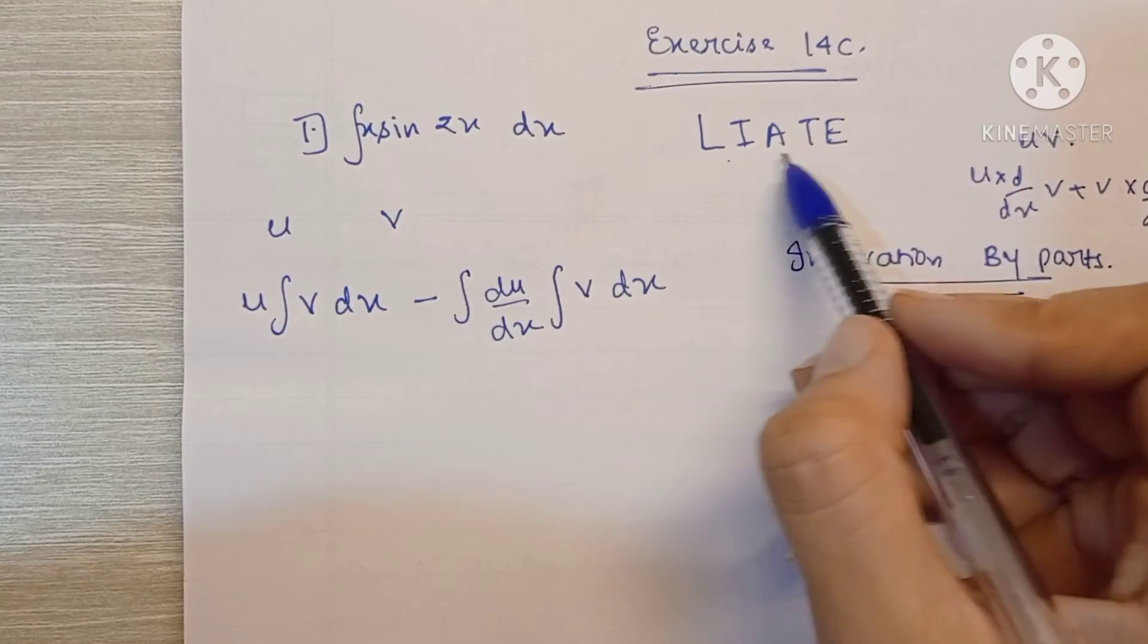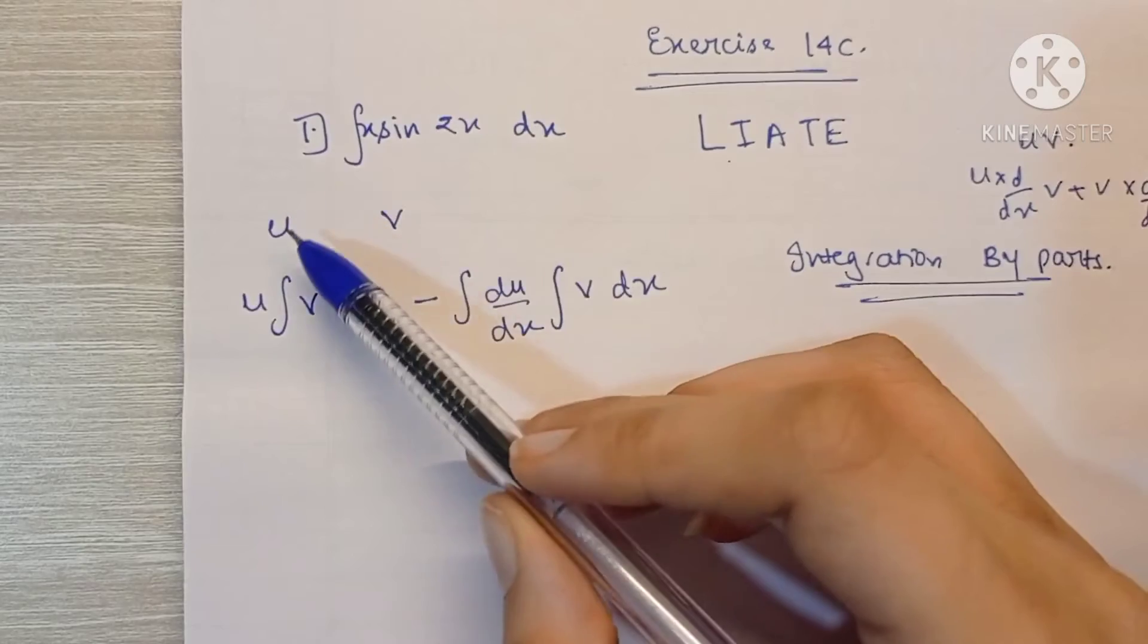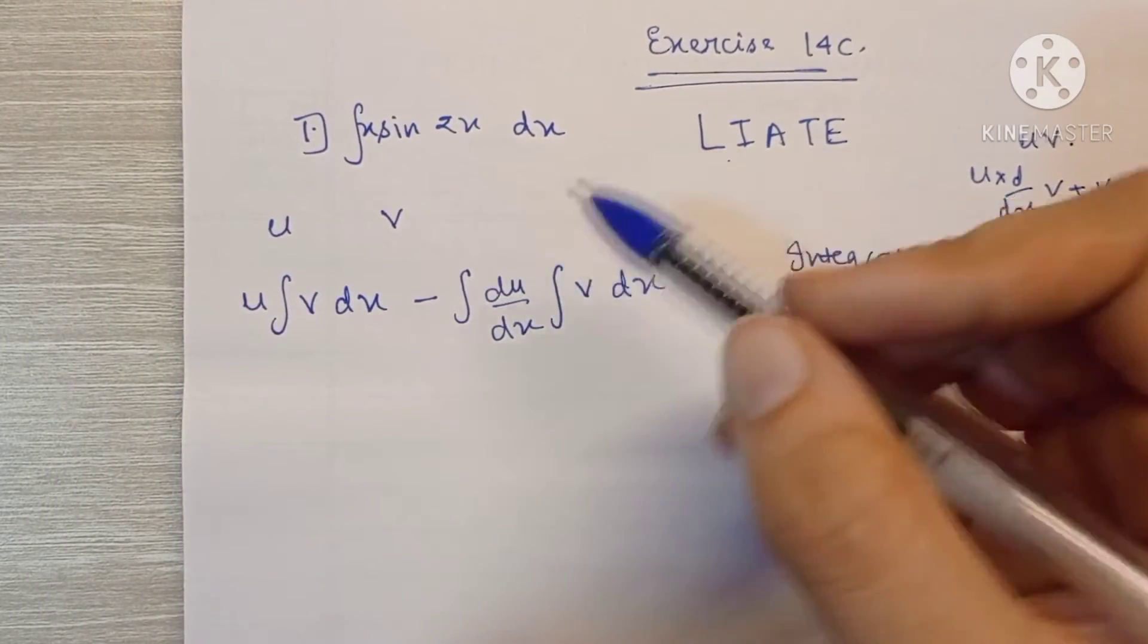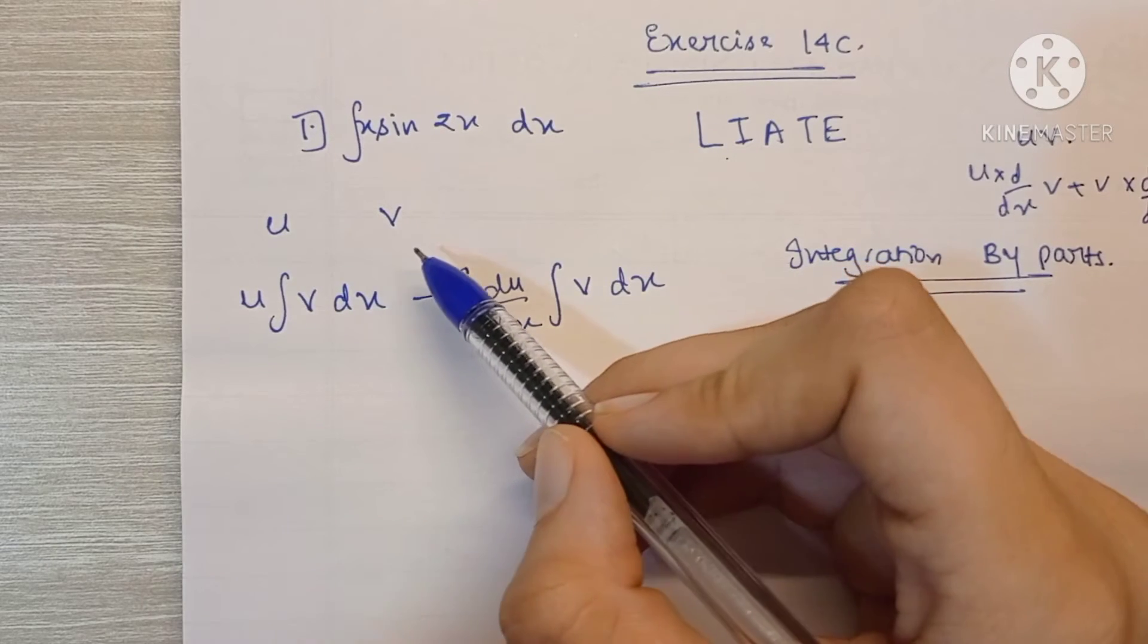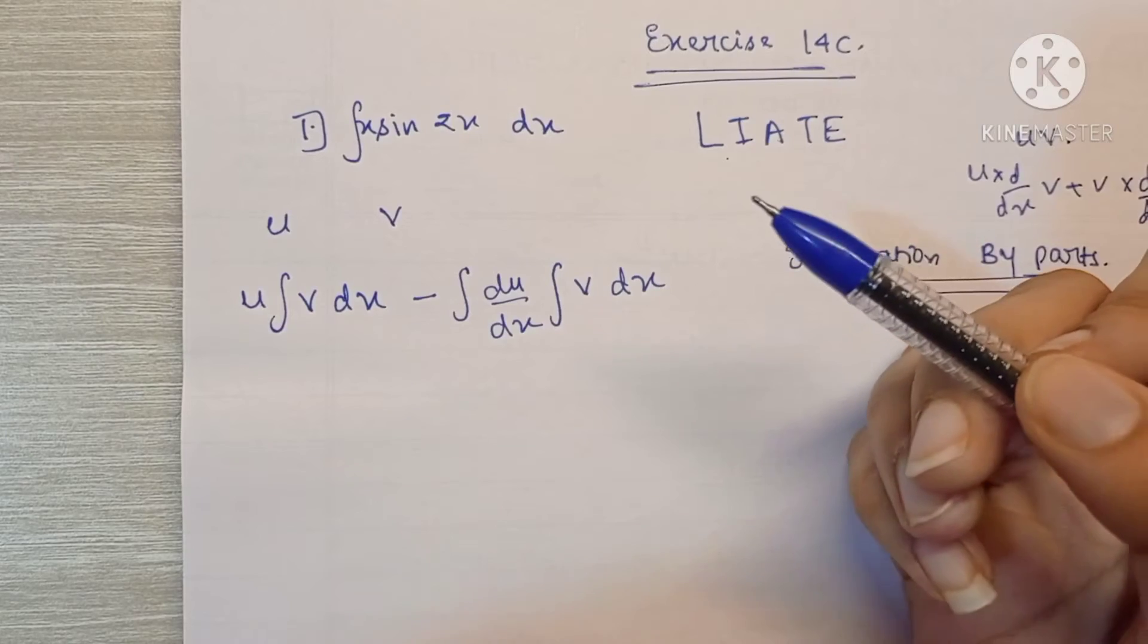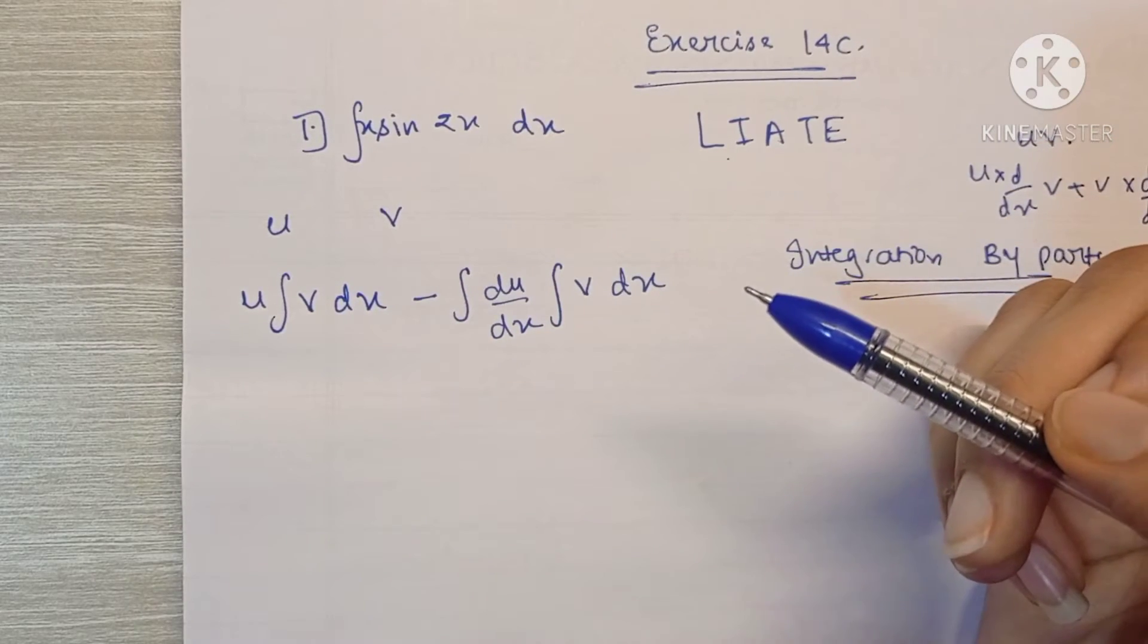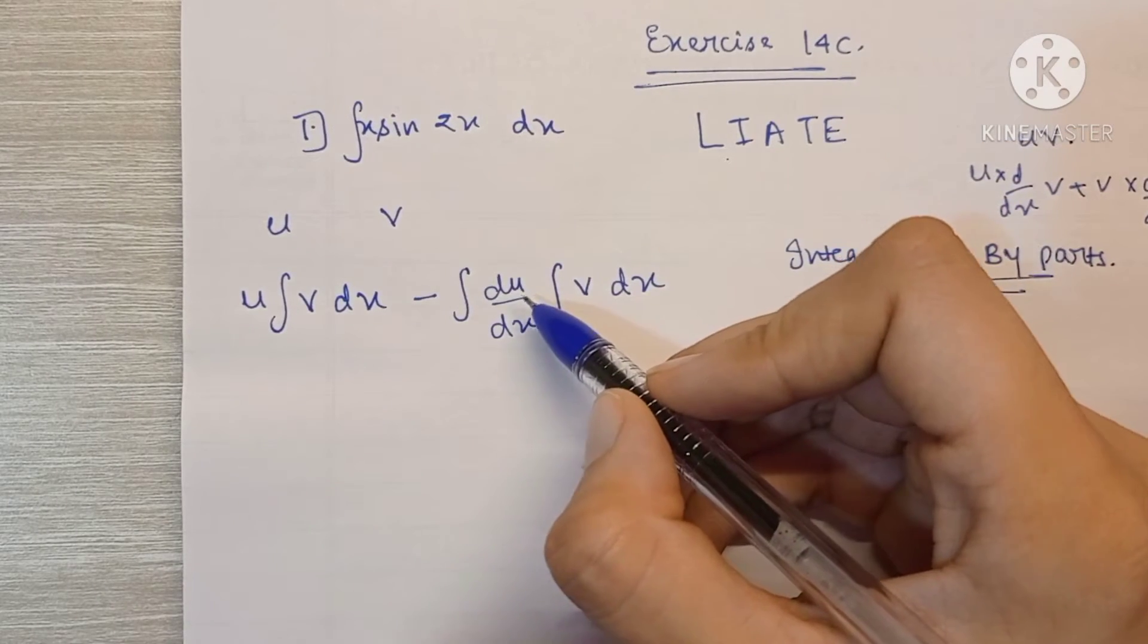And the LIATE rule helps us find out which function we should name as u and which function we should name as v. For example, whatever functions are easier to integrate we would give them the position of v. Whichever functions are easier to differentiate we would name them as u, name them as the first function.